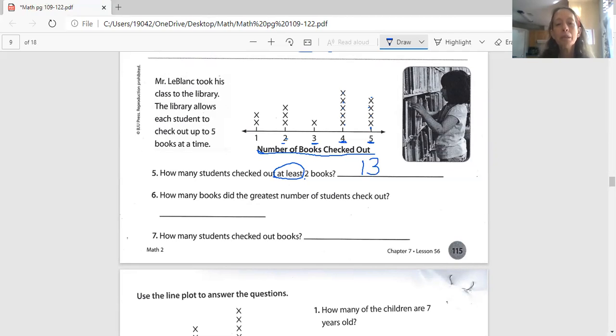And it wants to know, how many books did the greatest, there's another math word, number of students check out. Now, greatest number, that's the biggest number on our line. What is the biggest number on our line? Well, there it is, right there, five. That's the greatest number. And it wants to know, how many students did that? So now we just go to our five, because that's the greatest number. And we count that. One, two, three, four.